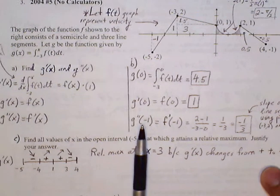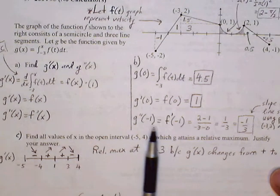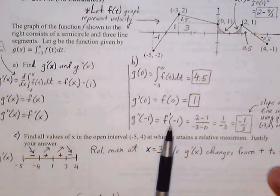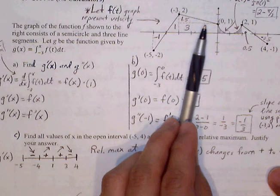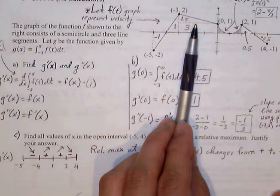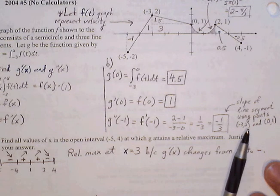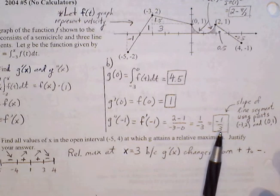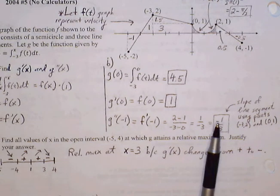For g double prime of negative 1: g double prime of x equals f prime of x, so g double prime of negative 1 equals f prime of negative 1, which is the slope of the function at x equals negative 1. Since we have a straight line, we use the slope formula with endpoints negative 3, 2 and 0, 1. The slope is 2 minus 1 over negative 3 minus 0, giving negative one third.